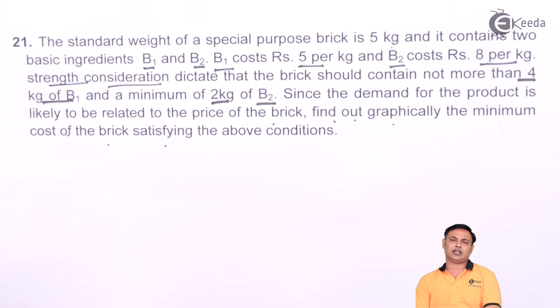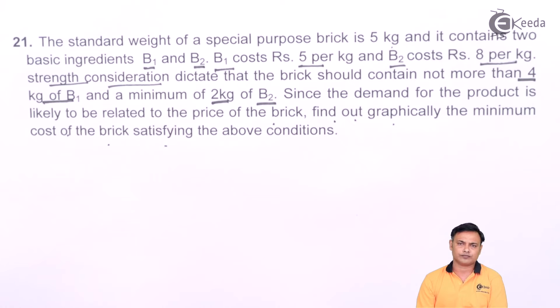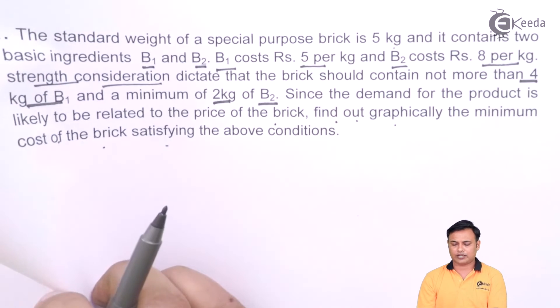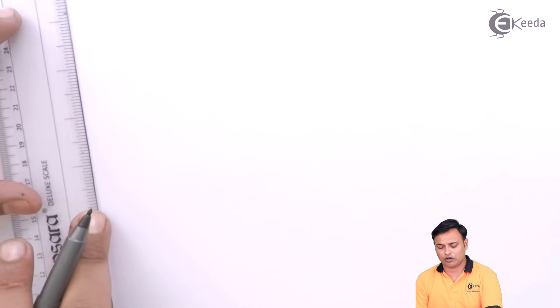We need to formulate this as a linear programming problem and decide what quantity I should mix for B1 and B2 to minimize my total cost. Let's first tabulate this into a table and then we will proceed further to the formulation.